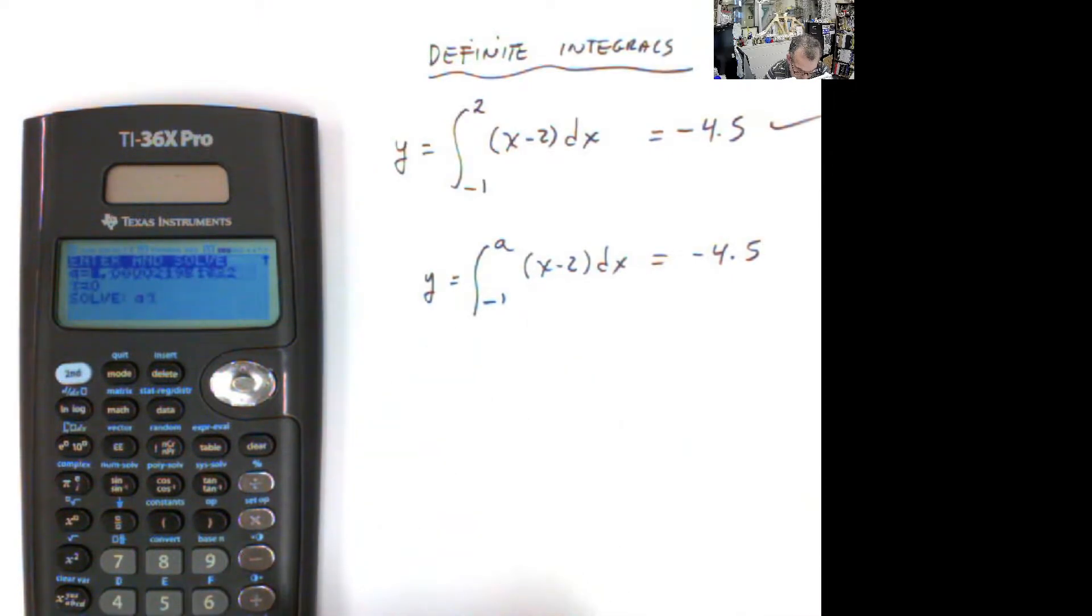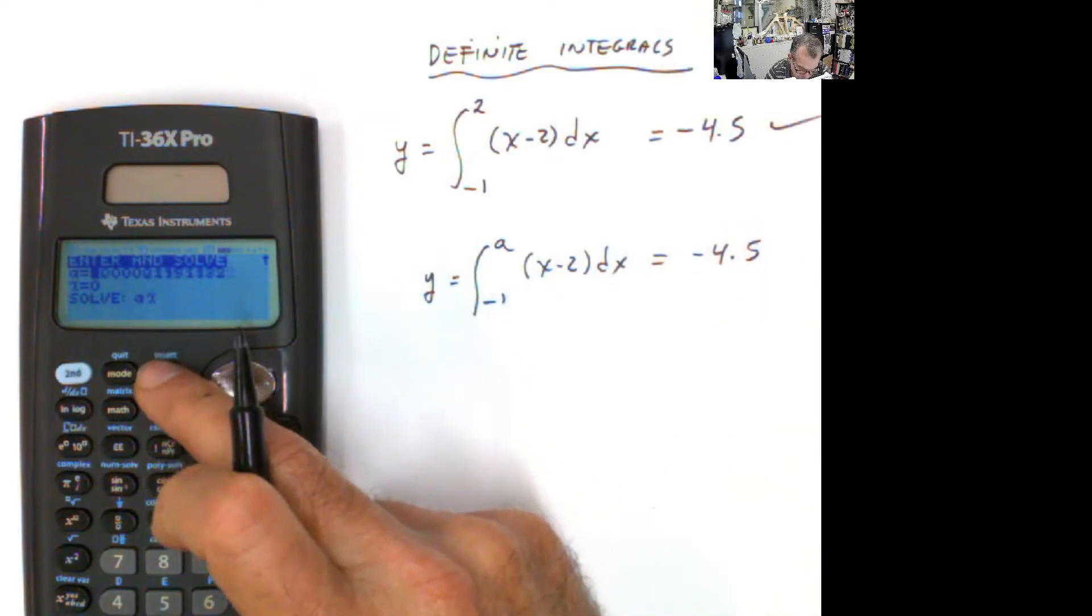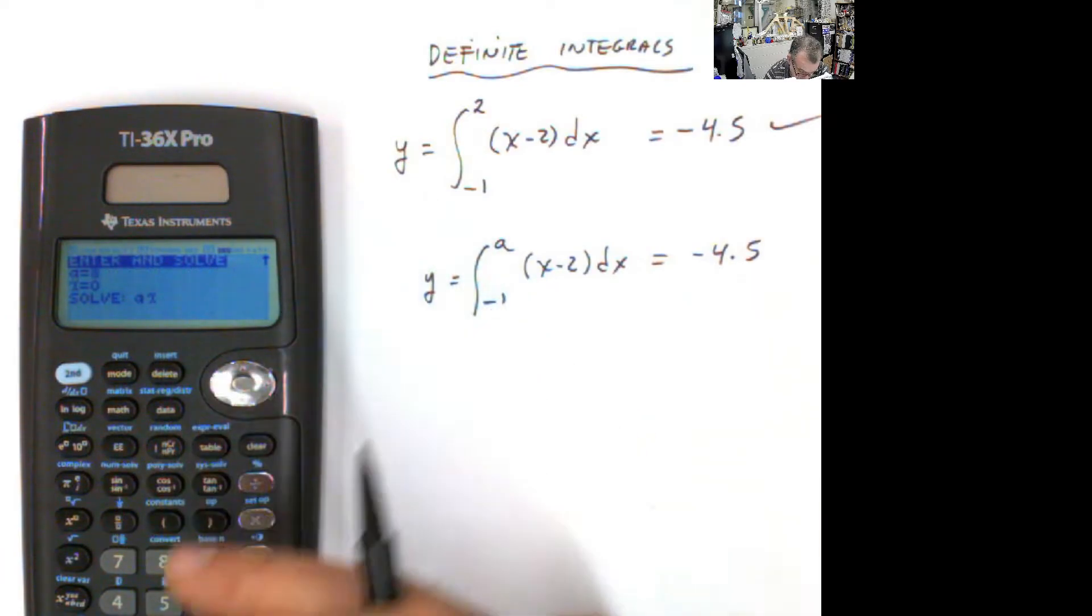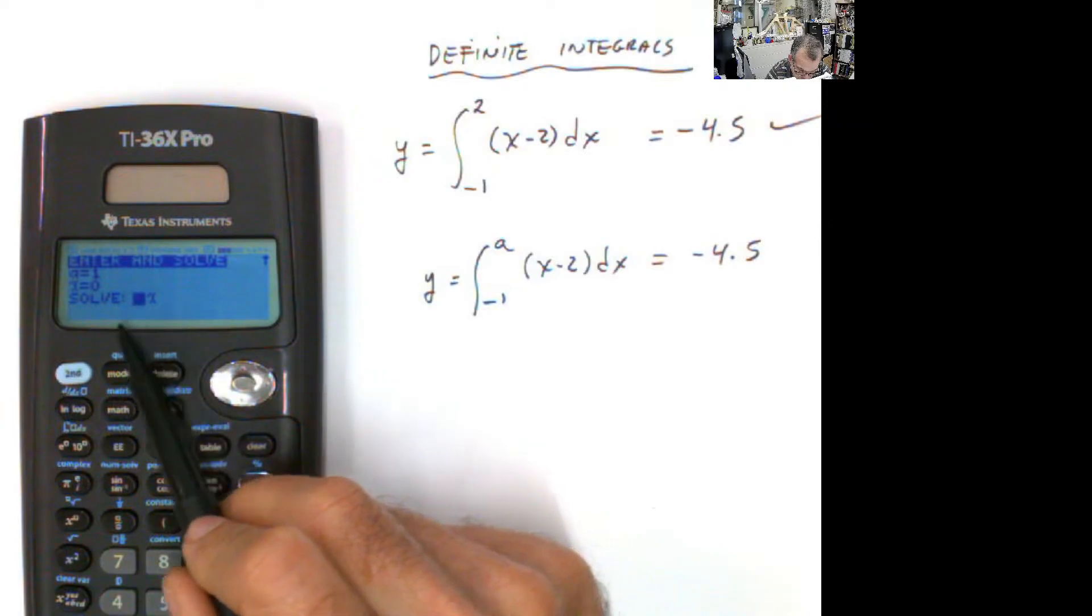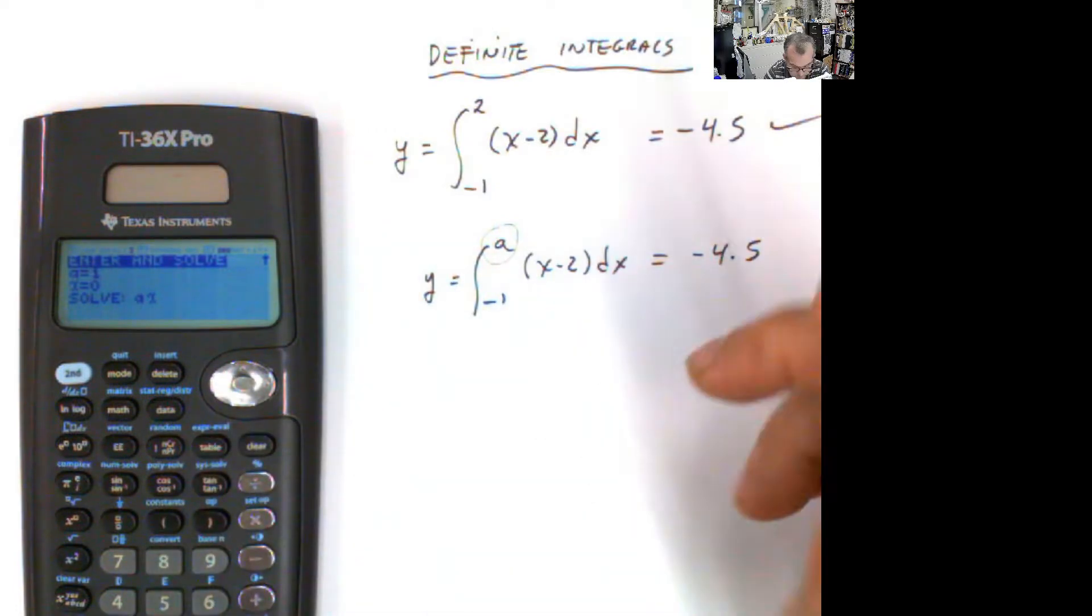So you hit Enter. Now, you have to have a little bit of patience here because it's going to take a while. So I'm going to put any guess that you want to. 1 or you can put 0. And then it says here, solve for x or solve for a. We are solving for a. That's what we want to. And you hit Enter over there and just wait.